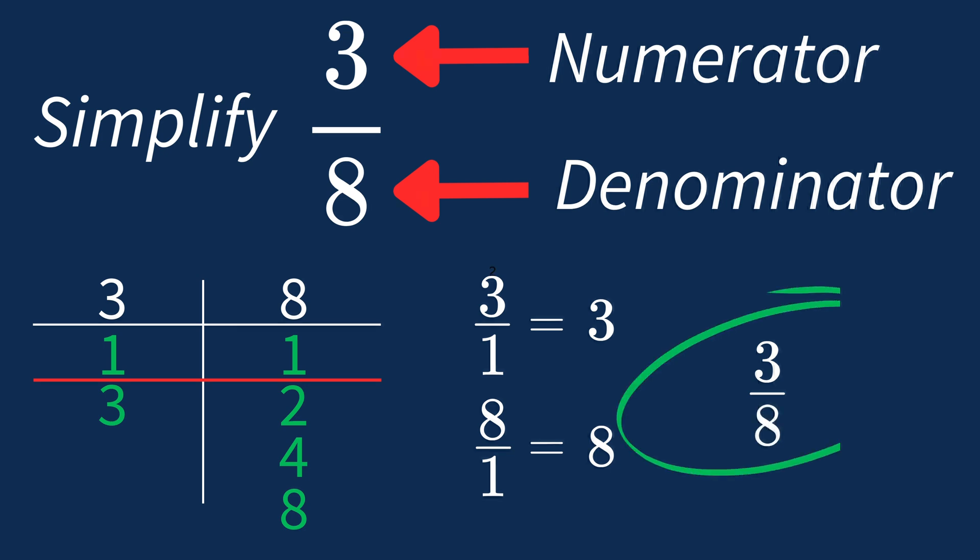This shows us that 3 over 8 is already in its simplest form. There's no larger number that divides into both numbers. 3 over 8 is an irreducible fraction, meaning it's as simple as it can get.